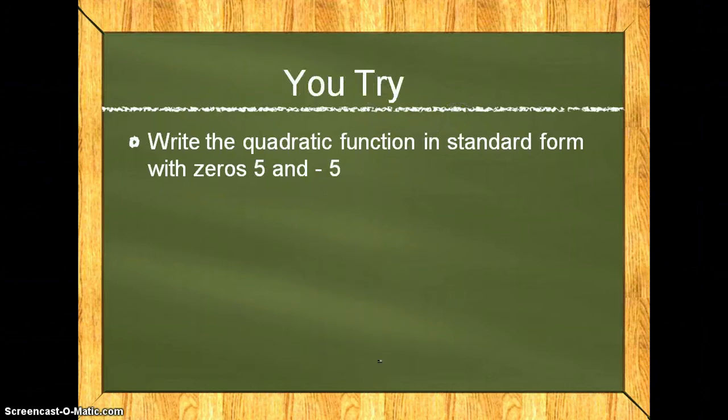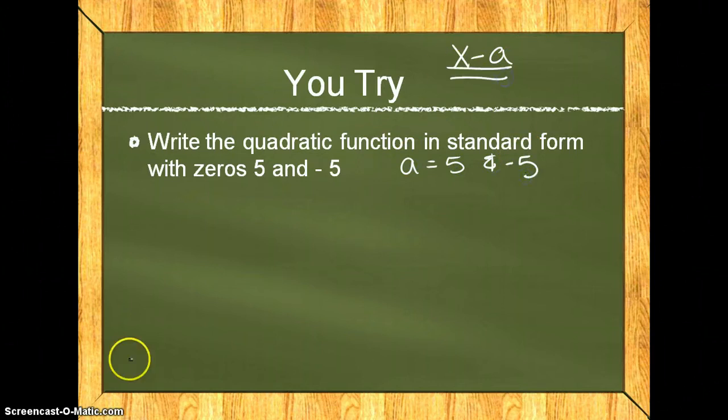Your you-try says to write the quadratic function in standard form with zeros 5 and negative 5. Again, x minus a is a factor, and your a's are both 5 and negative 5. So you will write two of these.